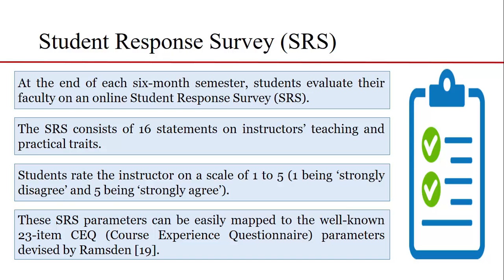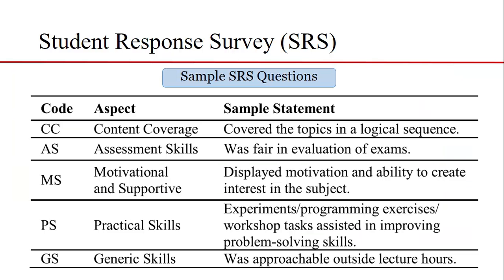By the end of each six-month semester, students evaluate their faculty on an online Student Response Service (SRS) system for every course. The SRS consists of 16 statements on instructors' teaching and practical traits. Students rate the instructor on a Likert-type scale of 1 to 5, where 1 is strongly disagree and 5 is strongly agree. These SRS parameters can be mapped to the well-known 23-item Course Experience Questionnaire (CEQ) devised by Ramston. After mapping, there are five scales of SRS: Content Coverage, Assessment Skills, Motivational and Supportive, Practical Skills, and Generic Skills, with a set of sample questions shown in the table.